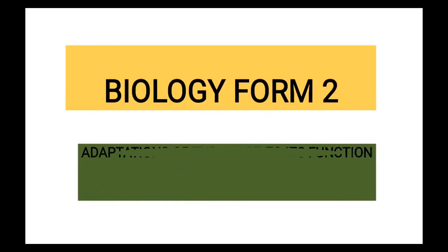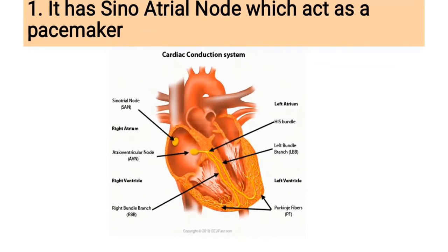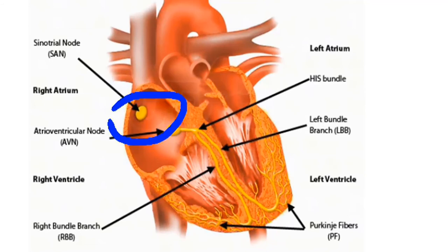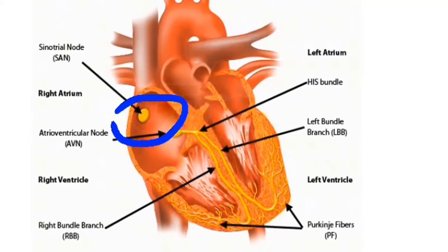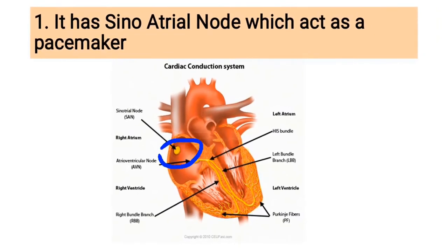Adaptations of the heart to its function. The first adaptation: it has a sinoatrial node which acts as a pacemaker. The term sinoatrial means sinus of the artery, and it is a small node which is yellow in color. This part is formed in a way that it is capable of causing contraction and relaxation in a rhythmic manner which can occur continuously throughout an individual's life. Therefore, it acts as a pacemaker in the sense that it regulates the number of beats the heart will have in a minute.